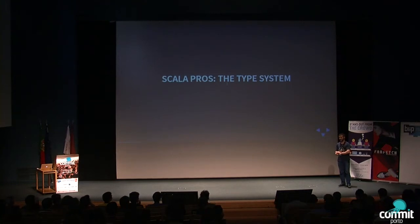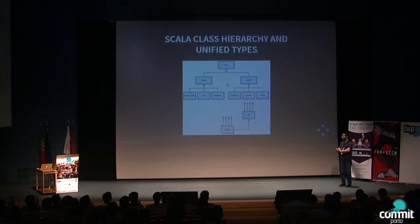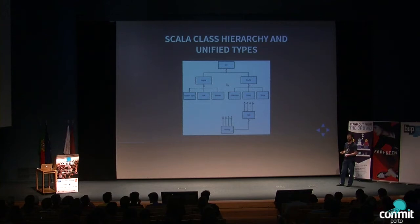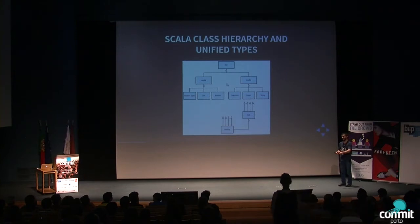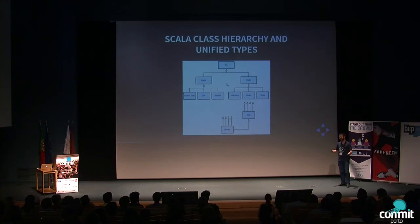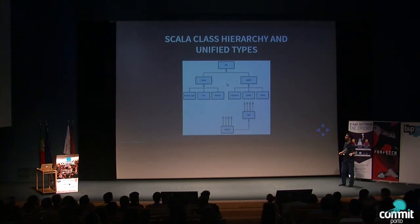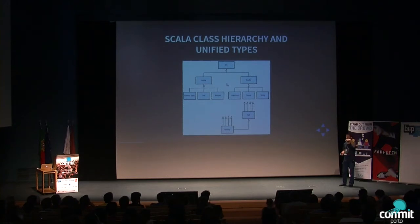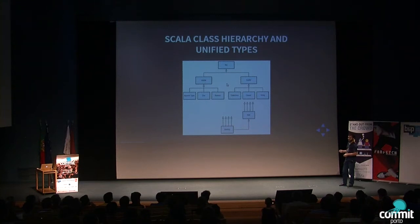One of the first pros is Scala's type system. Scala solves a problem that Java has had for a long time, which is unifying value and reference types. You don't have to deal with the int value type and the boxed Integer reference type. In Scala, all values are instances of a class and all values are objects. Also, the Scala class hierarchy has top and bottom types — there's the Any type that everything descends from, and the Nothing type that descends from everything.